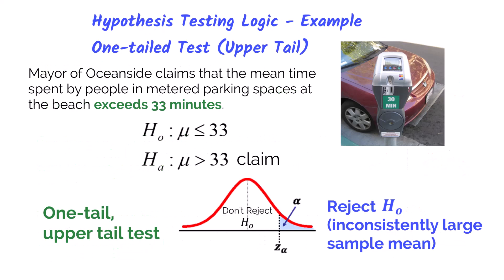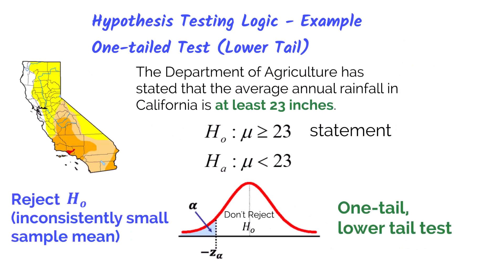Let's look at an example. The mayor of Oceanside claims that the mean time spent by people in metered parking spaces at the beach exceeds 33 minutes. Since the claim states 'exceeds 33 minutes,' implying greater than, this will be our alternative hypothesis. If we took a sample of 50 cars and the average time for those 50 cars is much larger than the hypothesized mean of 33 minutes, then the sample mean is in the upper tail. We would reject the null, since the evidence supports that people do park more than 33 minutes at the beach.